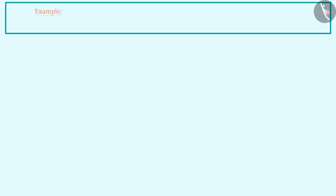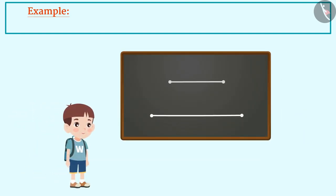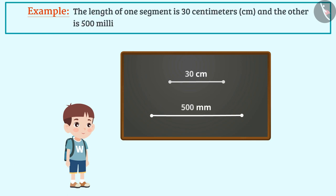Let us now see some examples related to them. Rohan is measuring two line segments. The length of one segment is 30 cm and the other is 500 mm. What will be their total length?